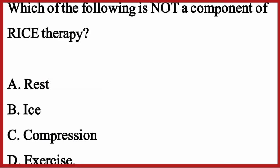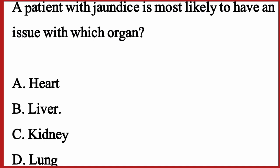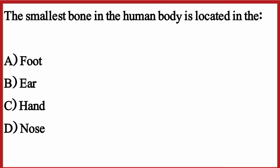Which of the following is not a component of PRICE therapy? The correct option is option D: Exercise. A patient with jaundice is most likely to have an issue with which organ? The correct option is option B: Liver. The smallest bone in the human body is located in — the correct option is option B: Ear.